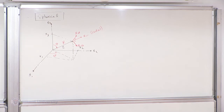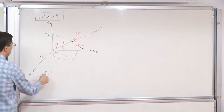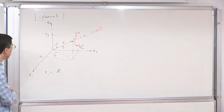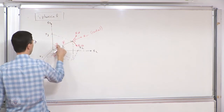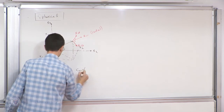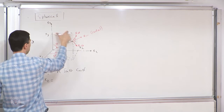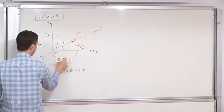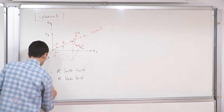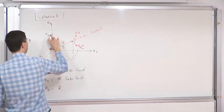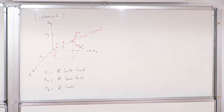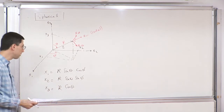You can do the math and say that x1 = r·sinθ·cosφ, x2 = r·sinθ·sinφ, and x3 = r·cosθ. Similarly you can express the basis vectors er, eθ, eφ in terms of theta and phi. I'm not going to do that here.